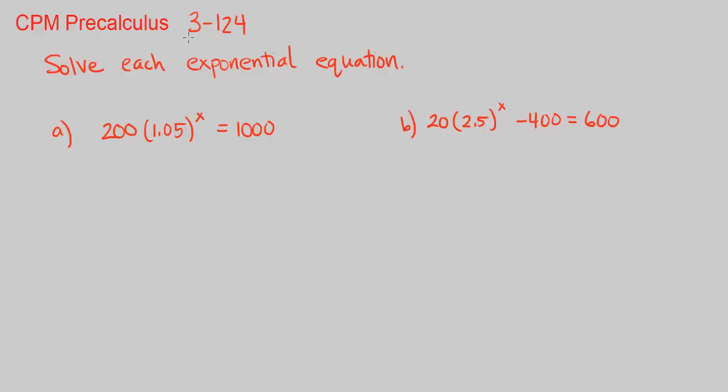This is CPM Precalculus, Chapter 3, number 124. Here we're asked to solve each exponential equation. We have 200 times 1.05 raised to the power of x equals 1000. First we can divide both sides by 200.